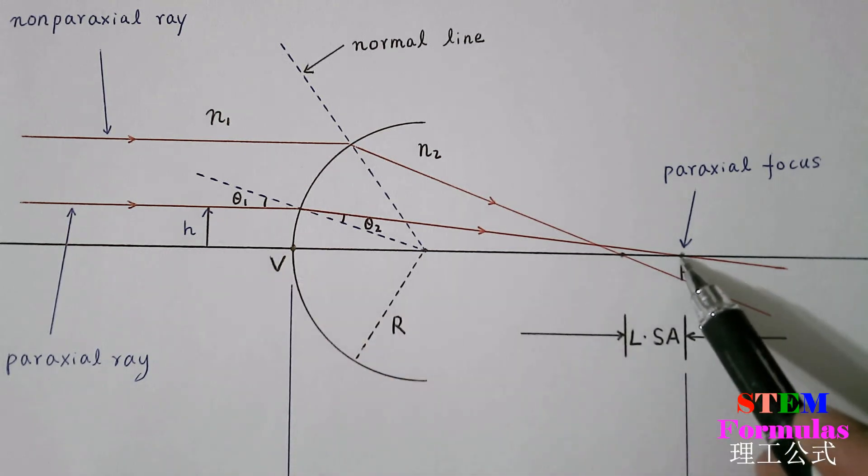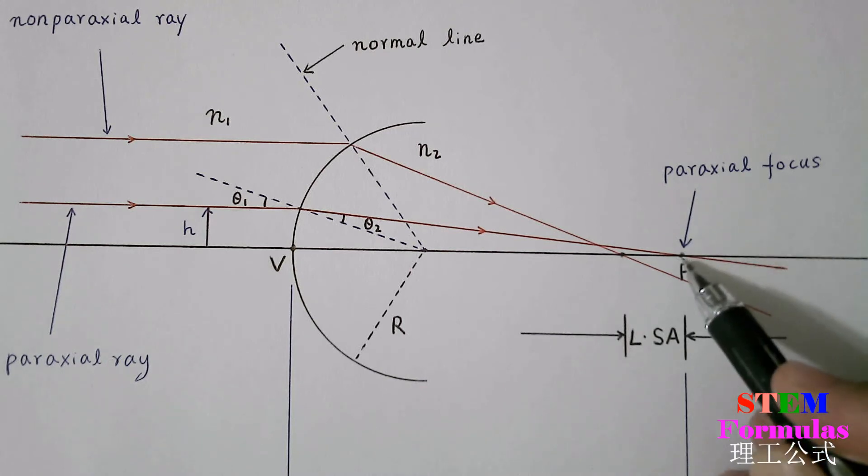Rays striking the surface at smaller distances above the optical axis are focused to one point F. This is the ideal focal point.